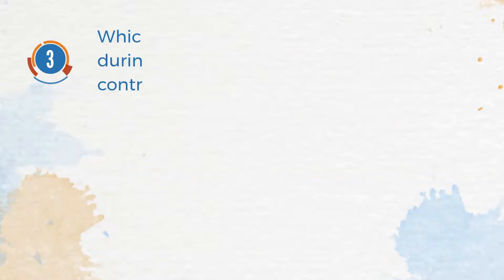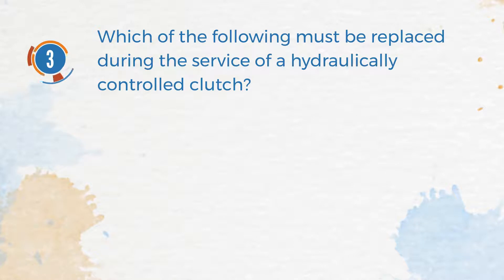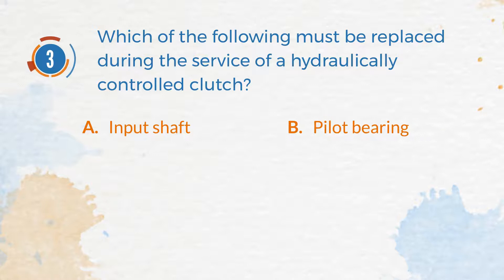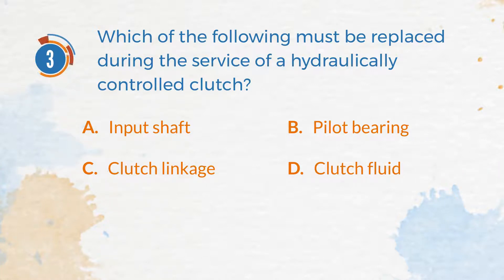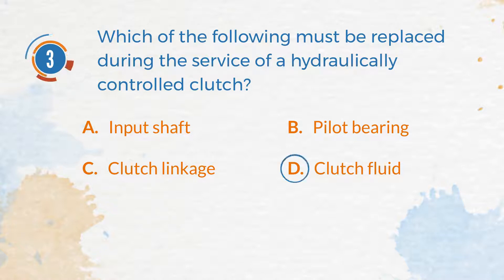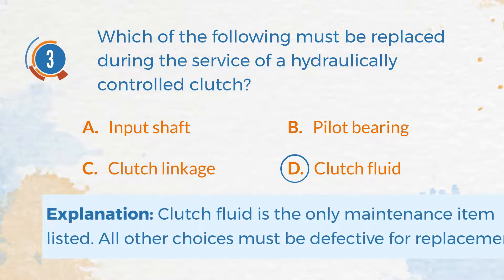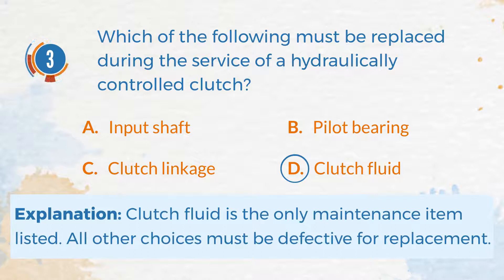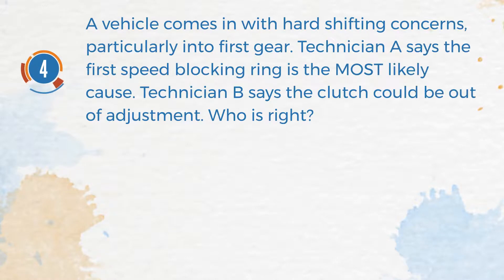Number 3. Which of the following must be replaced during the service of a hydraulically controlled clutch? A. Input Shaft. B. Pilot Bearing. C. Clutch Linkage. D. Clutch Fluid. The correct answer is D: Clutch Fluid. Explanation: Clutch fluid is the only maintenance item listed; all other choices must be defective for replacement. Number 4. A vehicle comes in with hard shifting concerns,